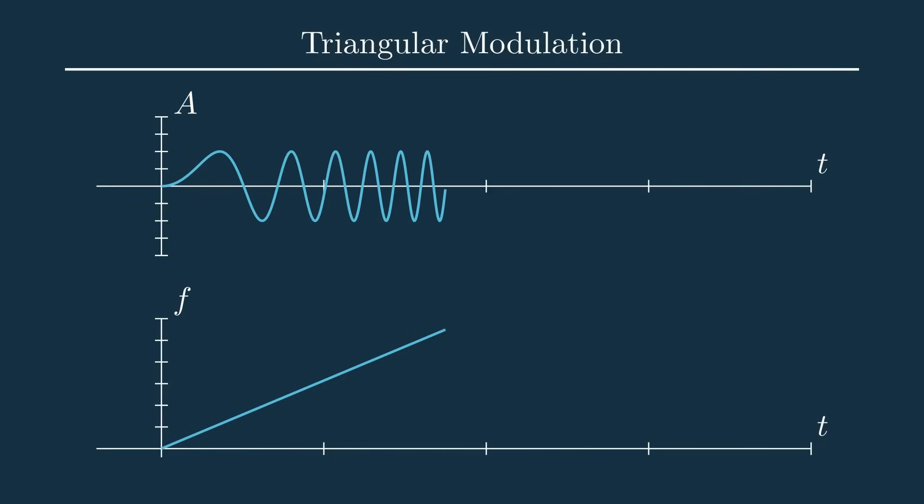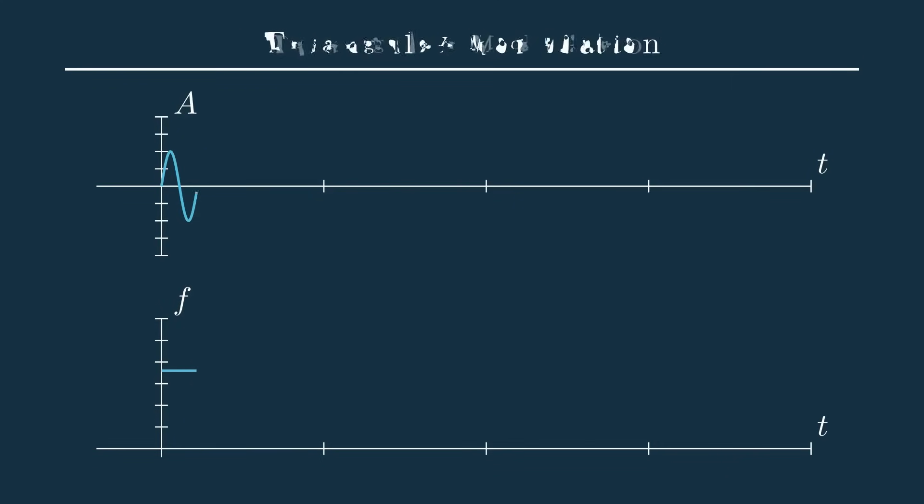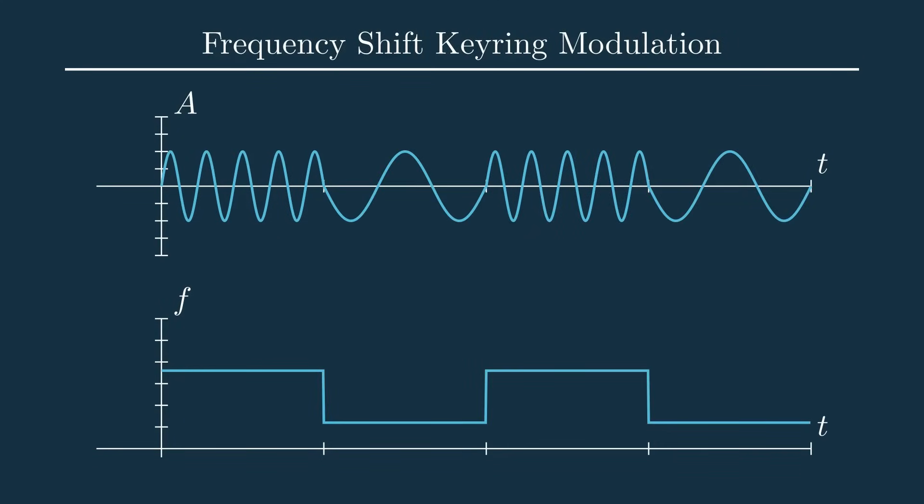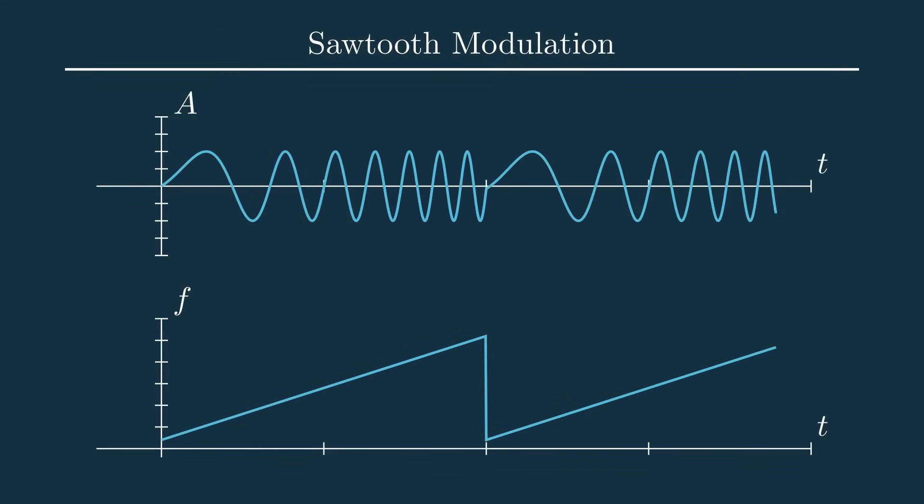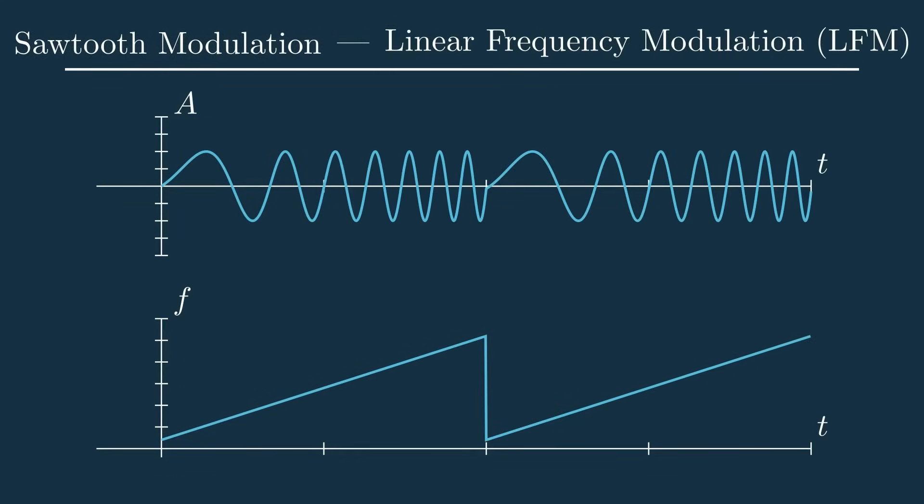like triangular modulation, which is great for determining a target's velocity, and I'll cover that in another video, or frequency shift keying, which is commonly used in digital systems. But a common and simple type of frequency modulation these radars use is a sawtooth wave, which is one of a subset of techniques called linear frequency modulation, or LFM.